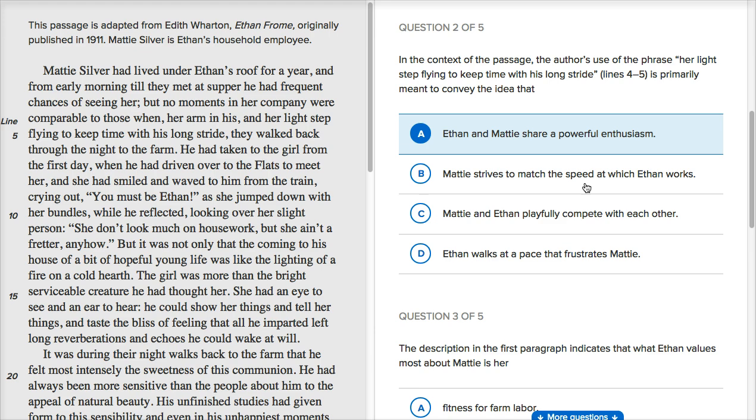So yeah, this first choice, Ethan and Maddie share a powerful enthusiasm, that looks like what's being described. In fact, as we read on, we realize that's at least what Ethan at the time thought was going on. B, Maddie strives to match the speed at which Ethan works. Well, no, that would be the case if they were saying that he had this long stride, and she was having trouble.